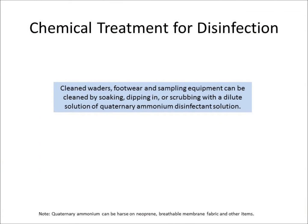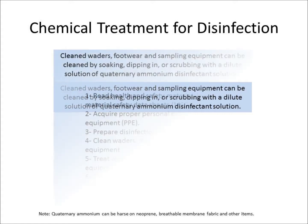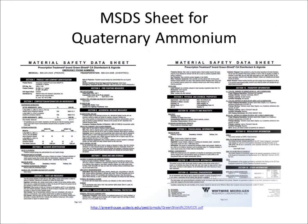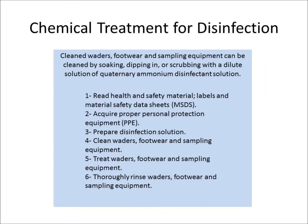Our last demonstration will be the chemical treatment for disinfection. Cleaned waders, footwear, and sampling equipment can be cleaned by soaking, dipping, or scrubbing with a dilute solution of a disinfectant. In our demonstration, we'll be using a dilute solution of quaternary ammonia. Before initiating this method, read all health and safety material related to your disinfectant — this would be the label and its Material Safety Data Sheet, also referred to as an MSDS. Acquire and use all proper personal protection equipment, especially rubber gloves and splash-proof eye protection.